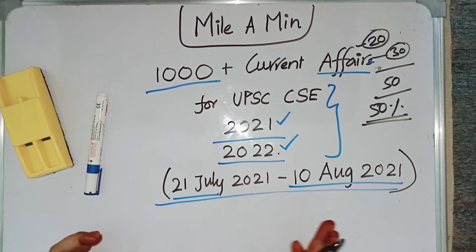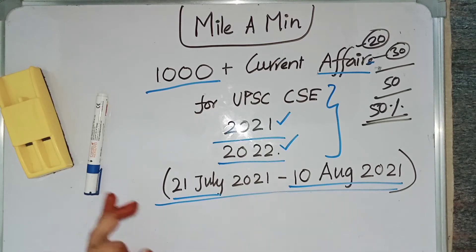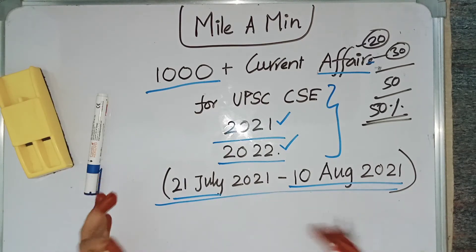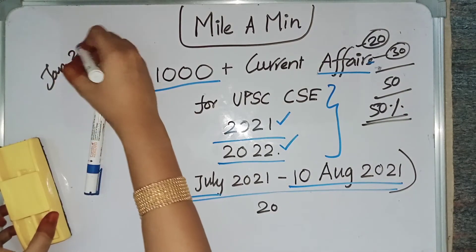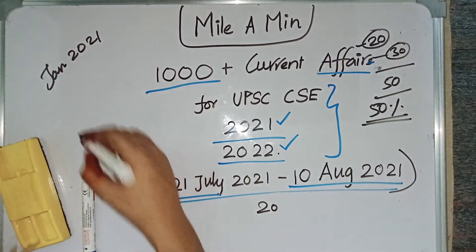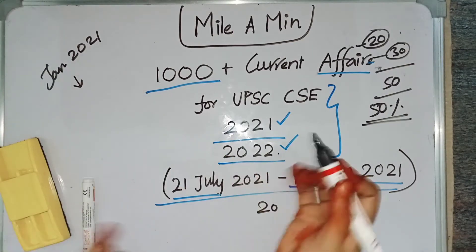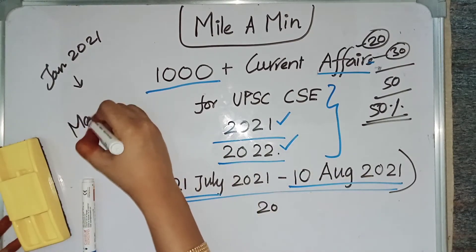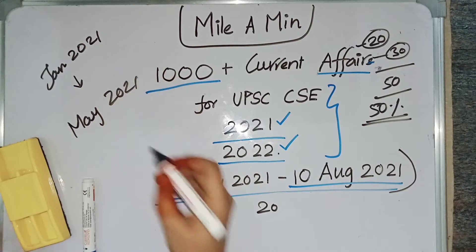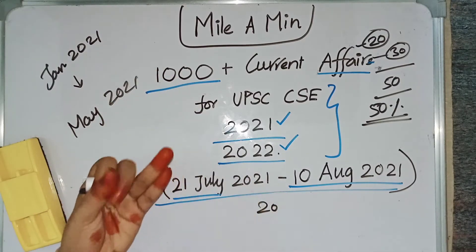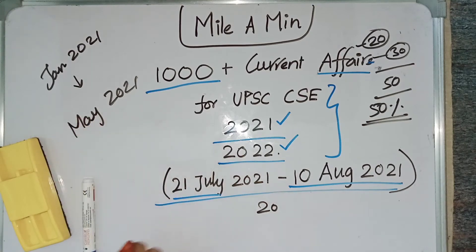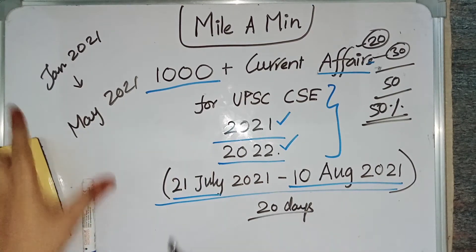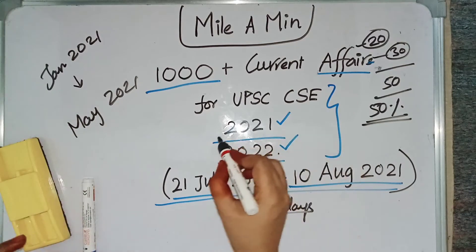So current affairs is very important for UPSC exams. The current affairs which we are planning to cover within this 20 days is from January 2021. We are going to start from January monthly current affairs and complete up to May current affairs — meaning January, February, March, April, and May — these five months of current affairs are going to be completed within 20 days.